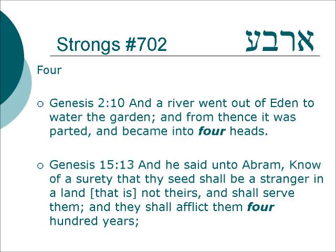Genesis 2:10 — And a river went out of Eden to water the garden, and from thence it was parted and became into four heads. Genesis 15:13 — And he said unto Abraham, Know of a surety that thy seed shall be a stranger in a land that is not theirs, and shall serve them, and they shall afflict them four hundred years.